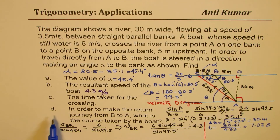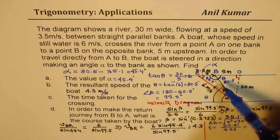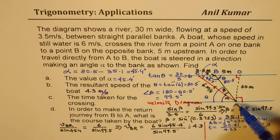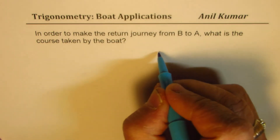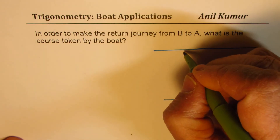Now we'll talk about the return journey. In order to make the return journey from B to A, what is the course taken by the boat? When the boat is returning from B to A, it has to head in a direction and then reach A. This is the part where Arum got stuck. I'll make a bigger diagram here just to explain the whole thing.